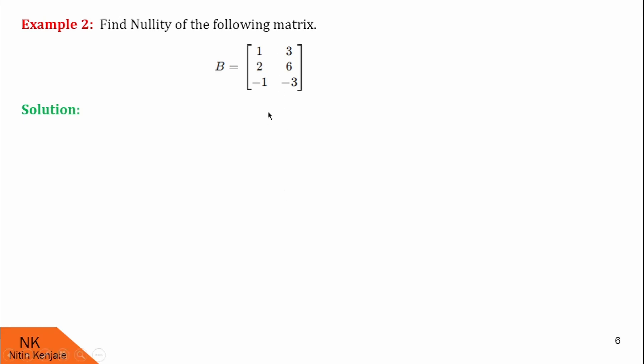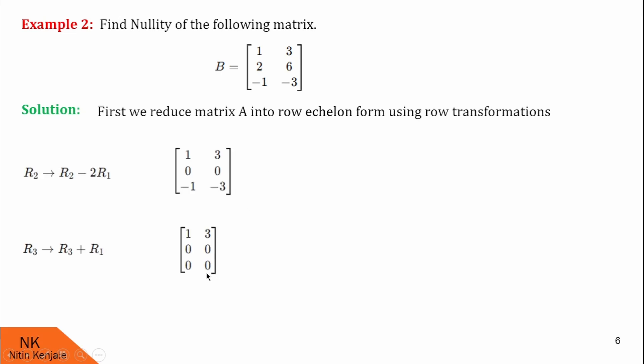Let us first reduce this matrix to row echelon form and then count it. To make this element 0, I will use transformation R2 minus 2 times R1 and to make this entry 0, I will use transformation R3 plus R1. So using which we will get this new matrix.